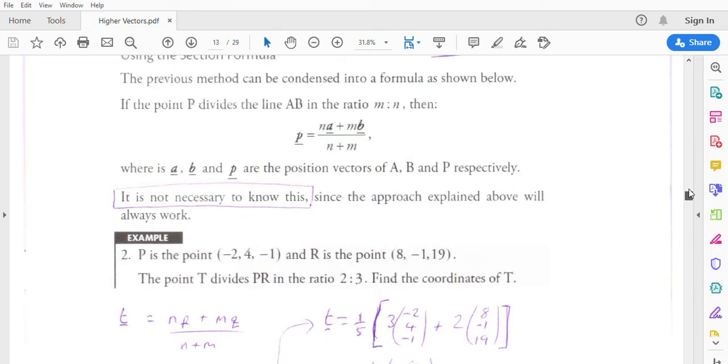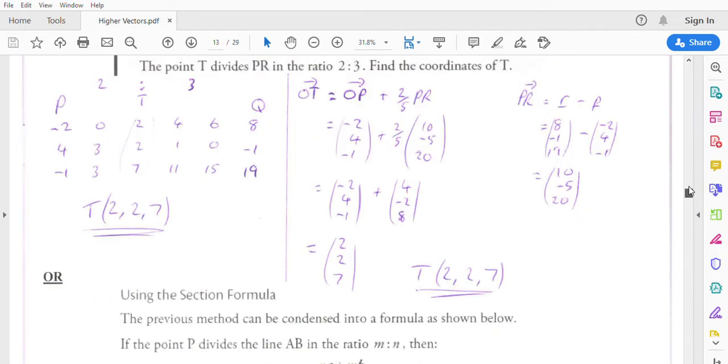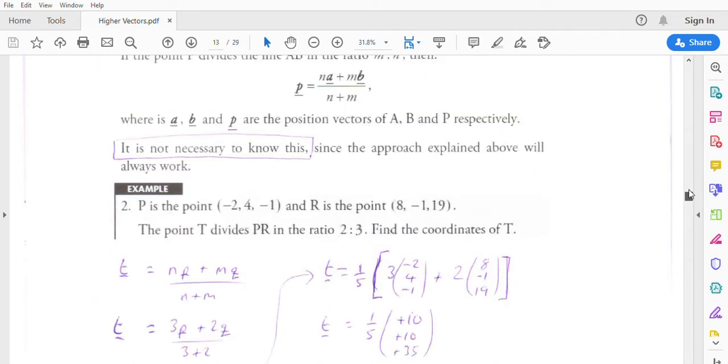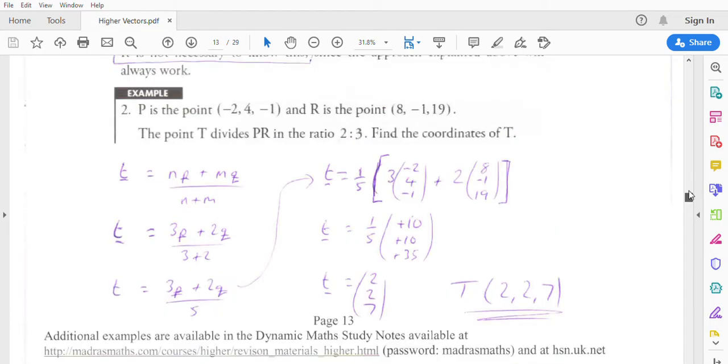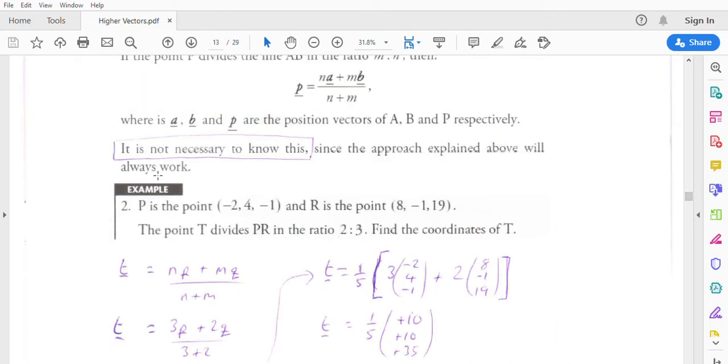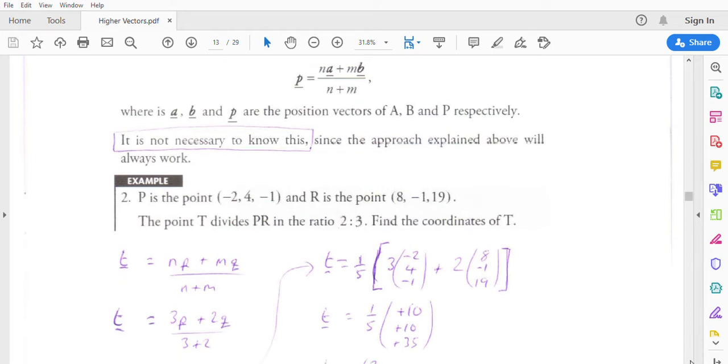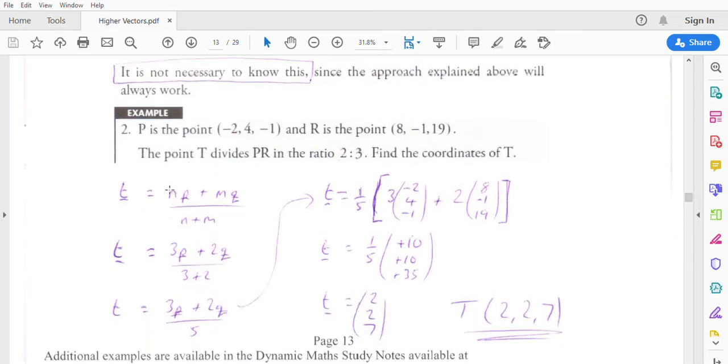It's not necessary to know this. The two approaches above would be totally valid. But if you want to just substitute into the formula, that's fine. Same question again. So we've got P and R. The point T divides P in the ratio 2 to 3. So N would be 3, M would be 2. So it'll be 3P plus 2R over 3 plus 2. So 3P plus 2R all over 5.